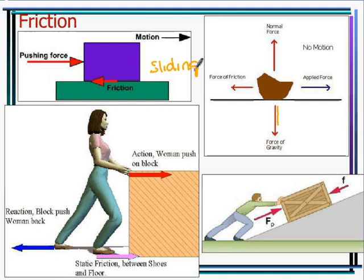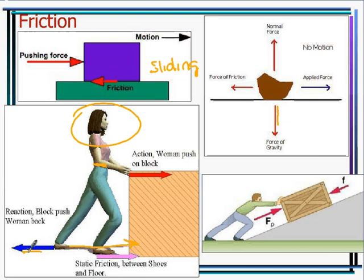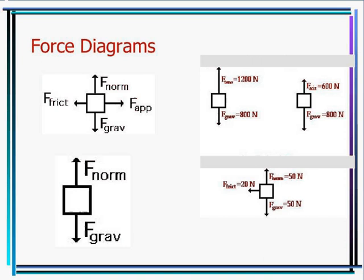Looking at an example with a person pushing a block: her force goes forward and the static or frictional force goes in the opposite direction. If you push something very heavy and start sliding backward, it's because your pushing force exceeded your static friction, causing you to slide. Friction always opposes the applied force direction.